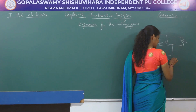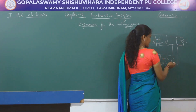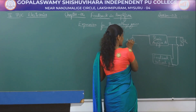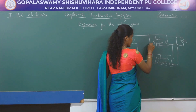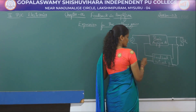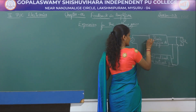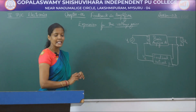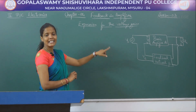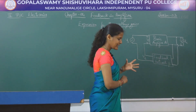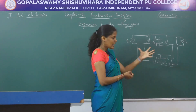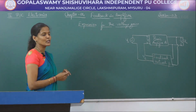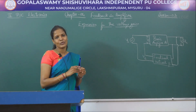Since this is a voltage series negative feedback, we are going to extract the output voltage and connect it back to the input of the basic amplifier in series. In order to extract the output voltage, I will connect these circuits in a shunt manner — extracting the output voltage. The input voltage source will be named Vs and the feedback voltage Vf will be given in series. So the voltage appearing here is V. This is the basic circuit we are going to use to derive an expression for the voltage gain of a voltage series negative feedback.